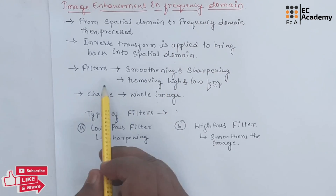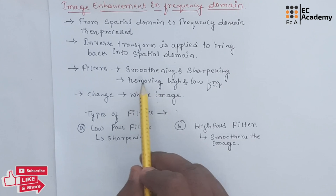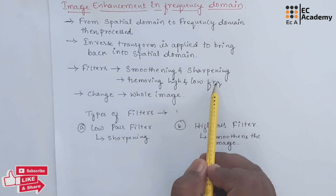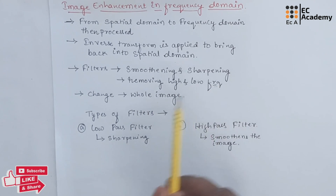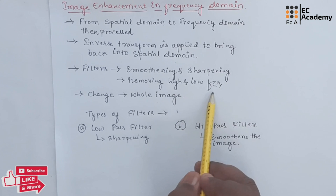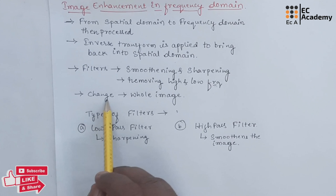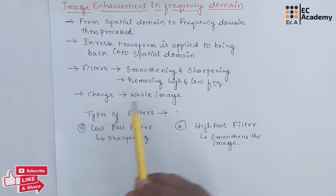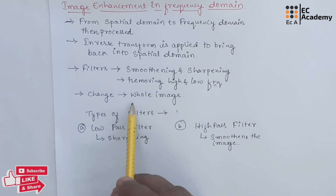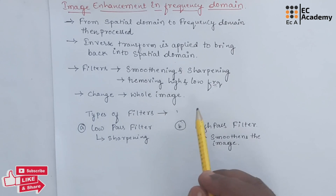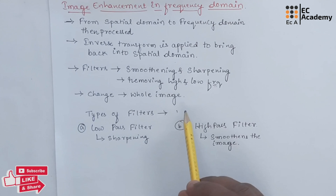In Frequency Domain, the filters are used for smoothening and sharpening of an image by removing high and low frequency components from the image. Once we apply the Frequency Domain filter, the change will take place on the entire image or whole image, unlike in spatial domain where the manipulation was taking place pixel by pixel.